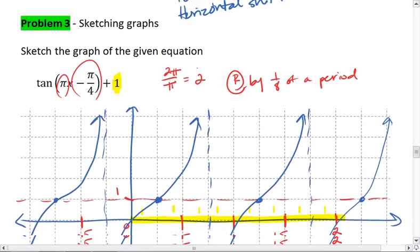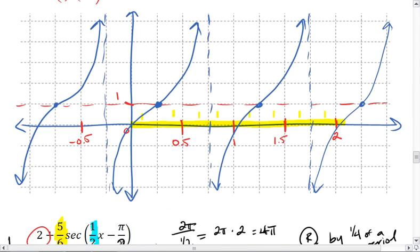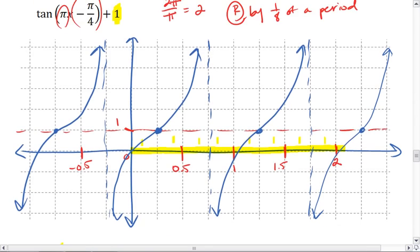For tangent and cotangent, you just have to know what that tangent looks like and know that cotangent is related to it.